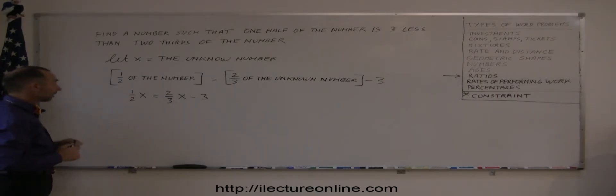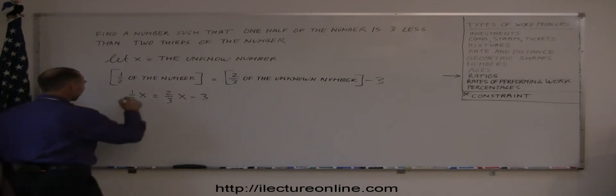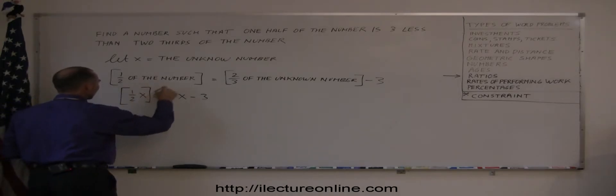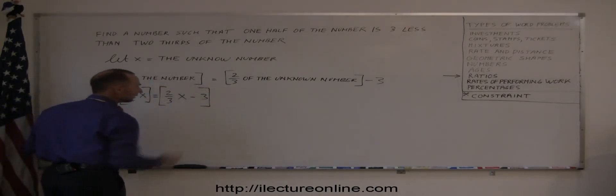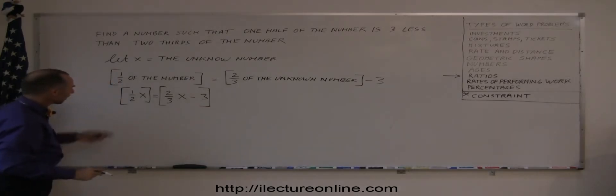Okay, now we have an equation which we can solve. We ended up with fractions. That means we want to multiply both sides of the equation by the lowest common denominator. We have two denominators, two and three. In this case, the lowest common denominator would be six, simply the multiplication of the two numbers.